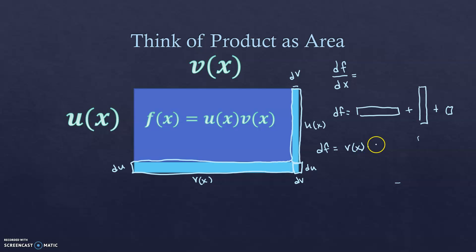So the change in f equals v(x)·du + u(x)·dv + du·dv. Since du and dv are both tiny, their product du·dv is negligibly small — infinitely skinny by infinitely tall — so we ignore it. This simplifies our expression for df.